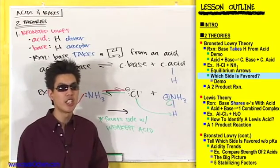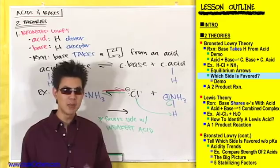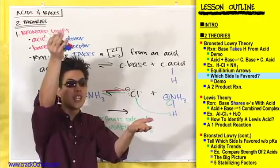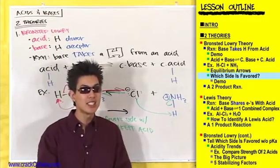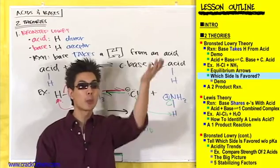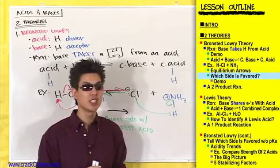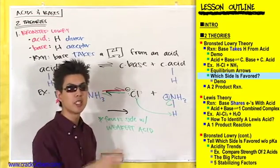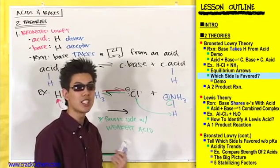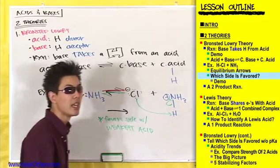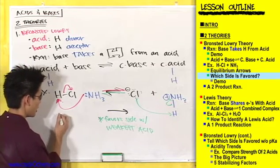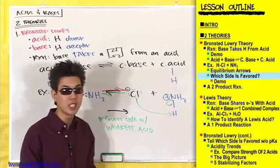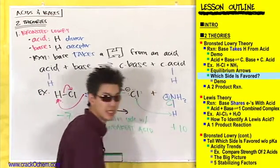According to general chemistry, what does it mean to be a weak acid? Does that mean you have a lower pKa or a higher pKa — a more negative or more positive pKa? A weaker acid is going to have a higher, more positive pKa than another acid. So HCl has a pKa of around negative 7, and NH4+ has a pKa of around positive 10.